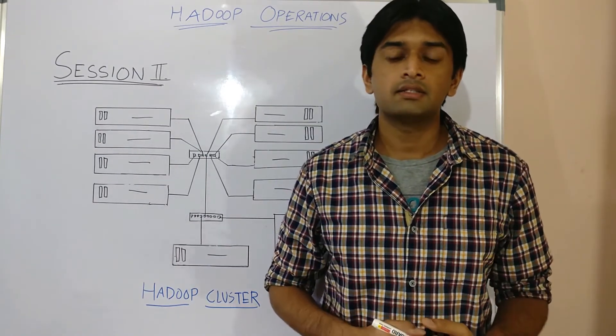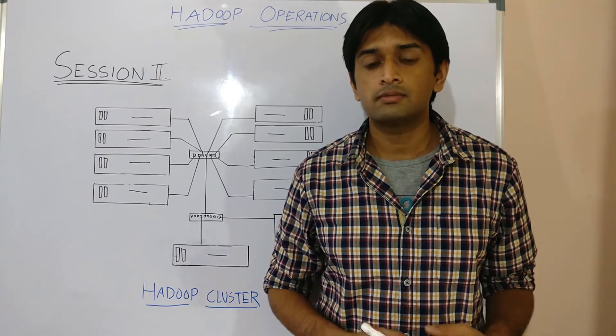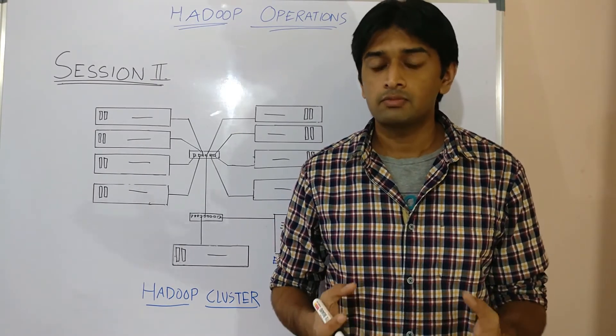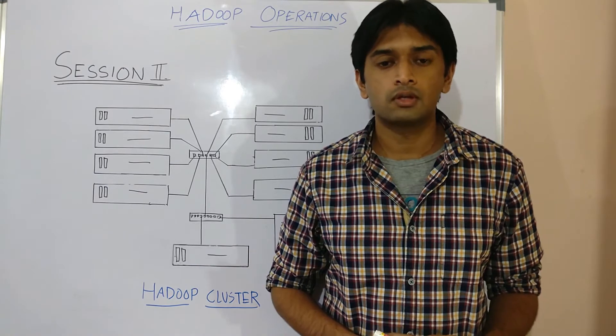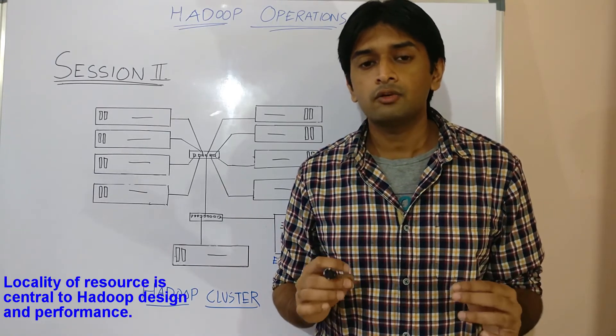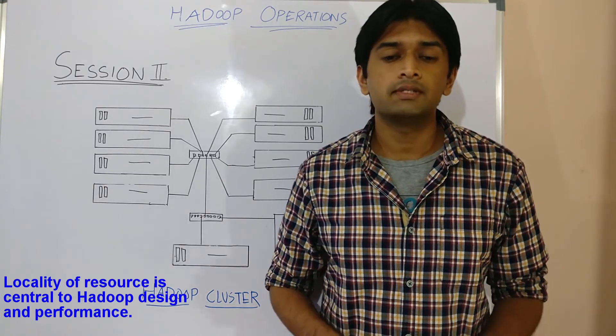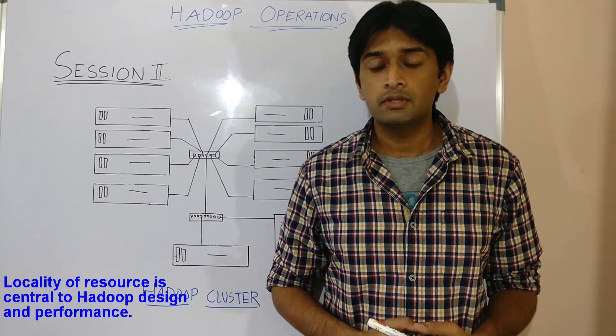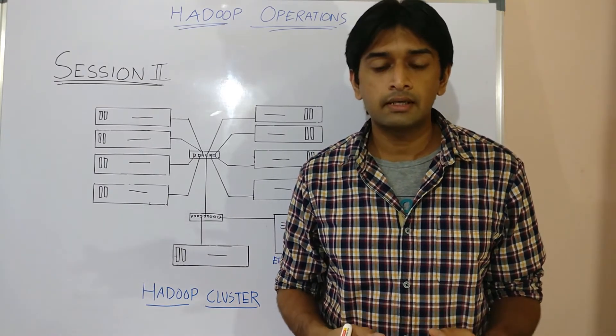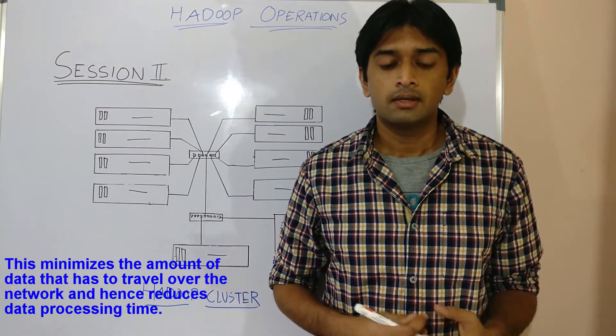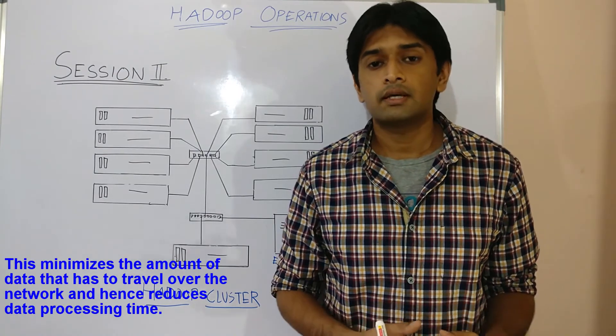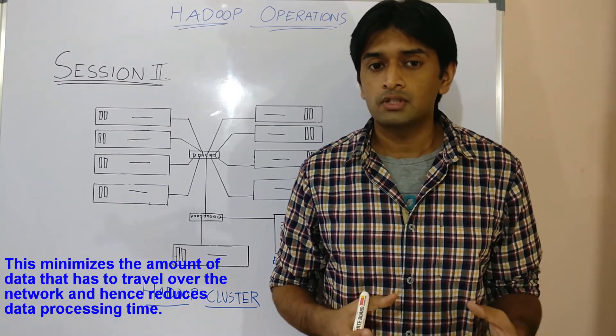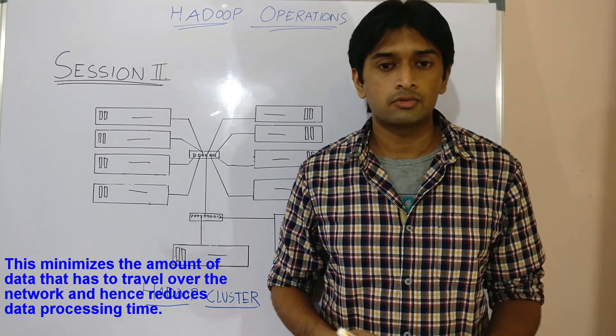However, this approach addresses one of the main challenges faced by traditional database systems in dealing with big data. That is movement of huge amounts of data over the network. Locality of resources is central to Hadoop design and performance. In principle processing should happen wherever the data is present locally. This minimizes the amount of data that has to travel over the network.